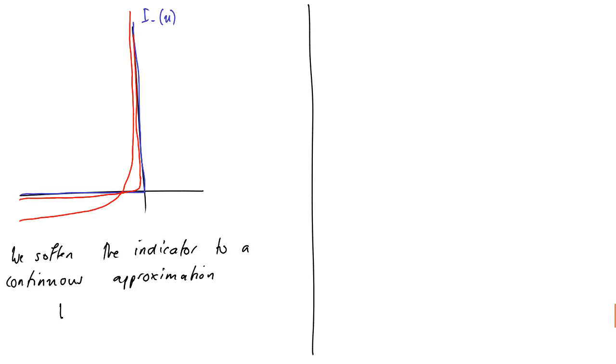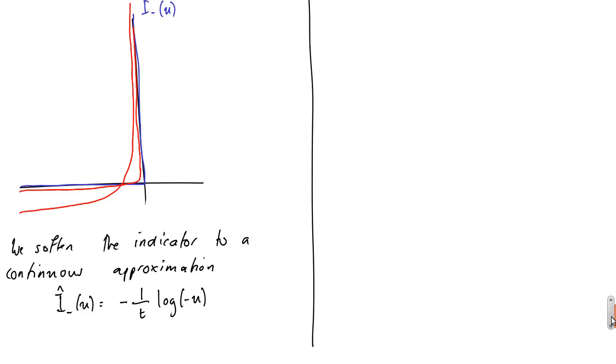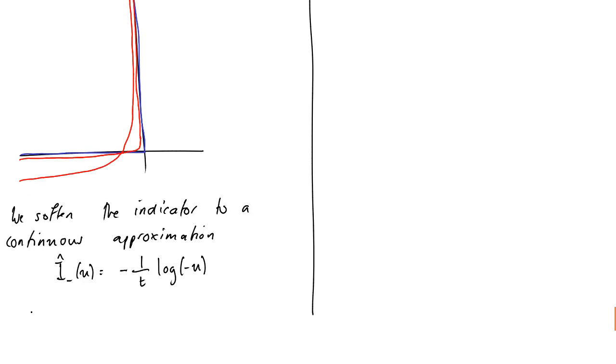Okay, and what is that? I hat minus of u is equal to negative 1 over t log minus u. Okay, so t is greater than 0 is a parameter that sets the accuracy of the approximation. Okay, if you make t very large, then it gets closer and closer to looking like our blue indicator function.